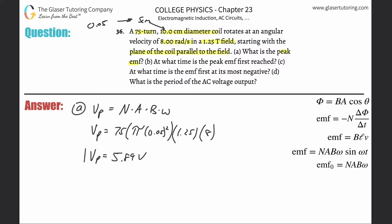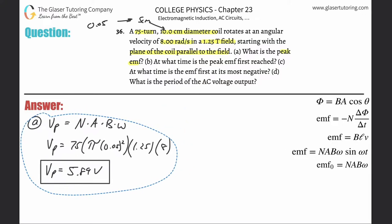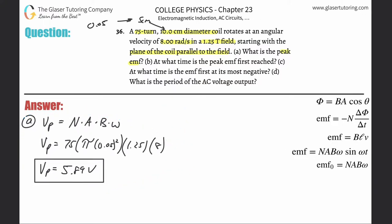That gives us about 5.89 volts — that's the peak EMF, the peak voltage. Now let's move on to part (b): at what time is the peak EMF first reached?